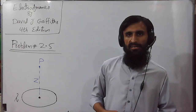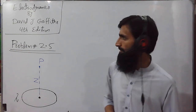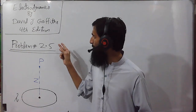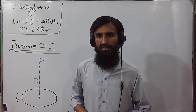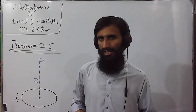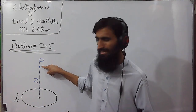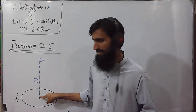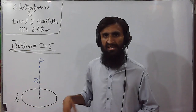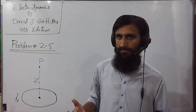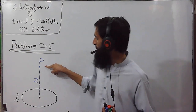Assalamu alaikum, hello students. Today we have to solve problem number 2.4 of Electrodynamics, fourth edition by David J. Griffiths. In this problem we have been asked to find the electric field at some point P at a vertical distance z from the center of a circular loop carrying uniform charge density lambda.